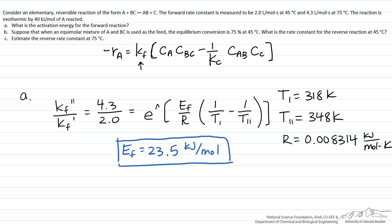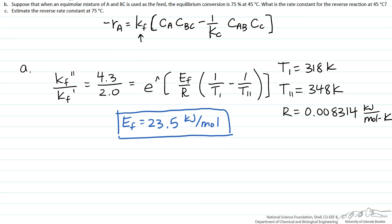In part B, we're told that an equimolar mixture of A and BC is used as the feed and we achieve an equilibrium conversion of 75%. The question asks for the reverse rate constant Kr at the lower temperature of 318 K (45°C). To solve for this, we recognize that Kr equals Kf at that lower temperature divided by KC, the concentration-based equilibrium constant for this reaction.